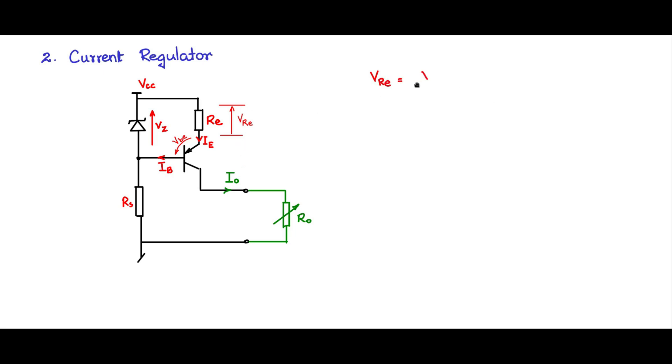So now, VRE is VZ constant minus VBE drop will be the voltage. So if you take this loop and apply the Kirchhoff's voltage equation, you will get VZ minus VBE and IE is VRE divided by RE and therefore you have VRE which is VZ minus VBE divided by RE. Now this is a constant, VZ is a constant, VBE is a constant, RE is a fixed value therefore IE is a constant.